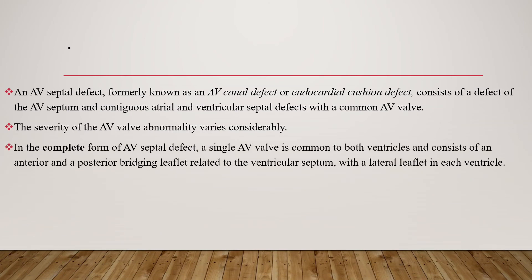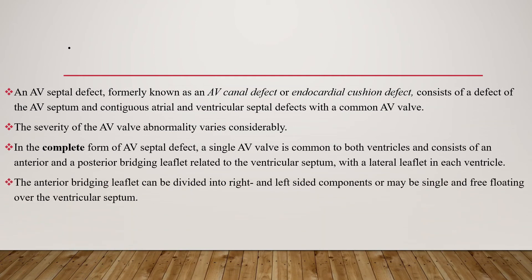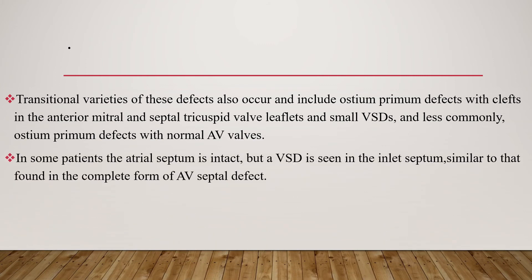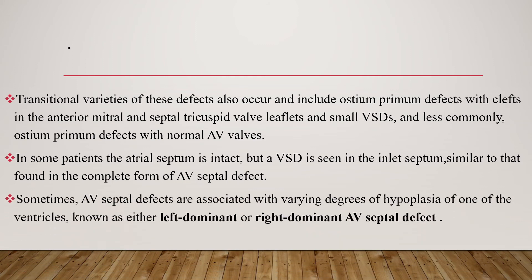In the complete form of AV septal defect, a single AV valve is common to both ventricles, consisting of anterior and posterior bridging leaflets related to the ventricular septum with a lateral leaflet in each ventricle. The anterior bridging leaflet can be divided into right and left-sided components, or it might be single or free-floating over the ventricular septum. Complete AV septal defect is common in children with Down syndrome. Transitional varieties also include ostium primum defect with clefts in the anterior mitral and septal tricuspid valve leaflets and a small VSD. Sometimes AV septal defects are associated with varying degrees of hypoplasia of one ventricle, known as left-dominant or right-dominant AV septal defect.